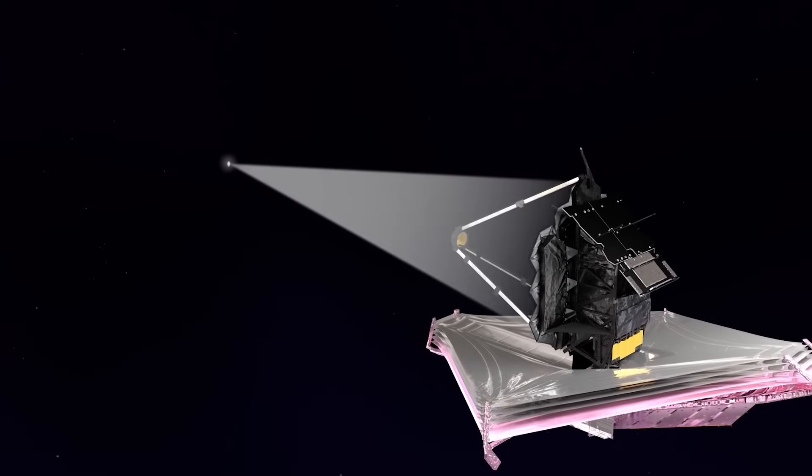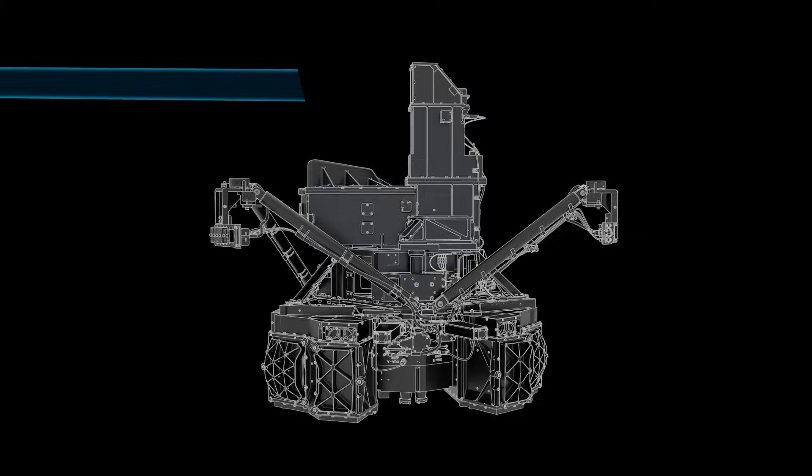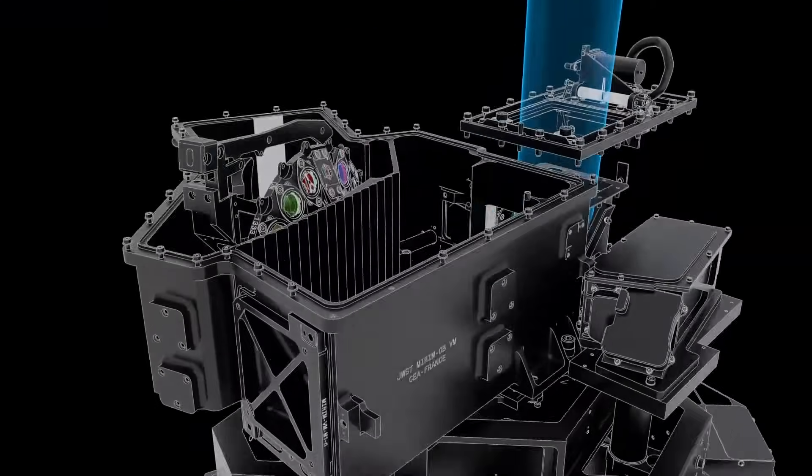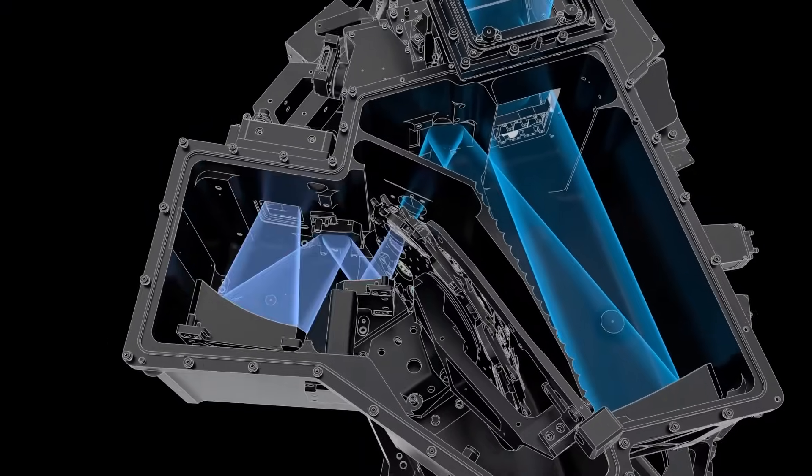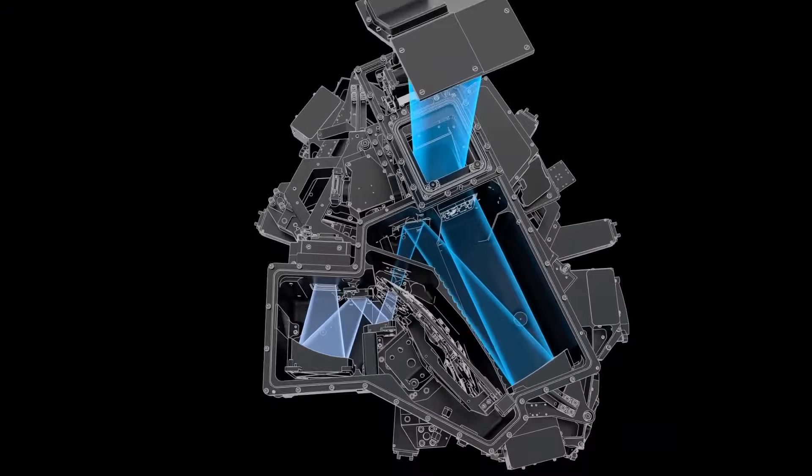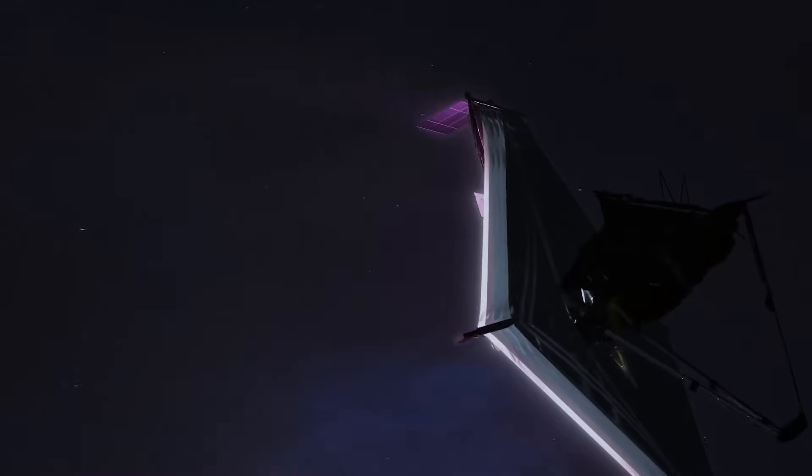A crucial feature of James Webb is its high-resolution and high-sensitivity instruments, which allow it to perceive objects too old, distant, or faint to be detected by Hubble. By picking up these elusive signals from the cosmos, the James Webb gives us the opportunity to explore the birth of the universe, the formation of galaxies, and even delve into the enigmatic worlds of dark matter and dark energy.